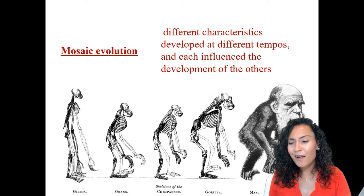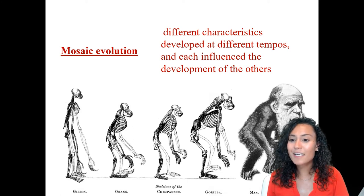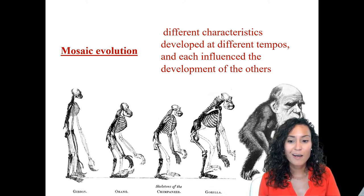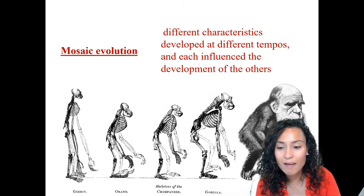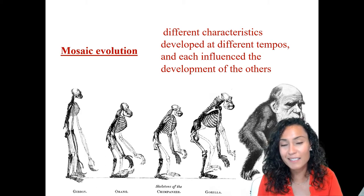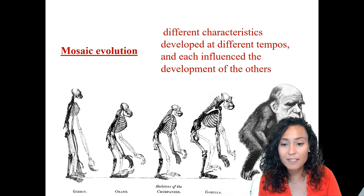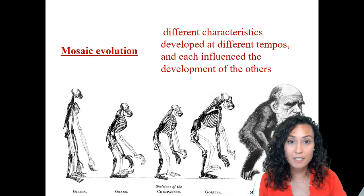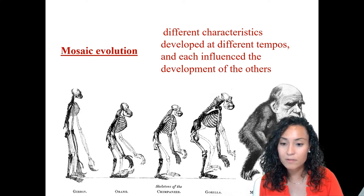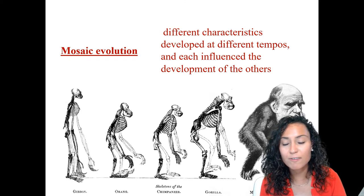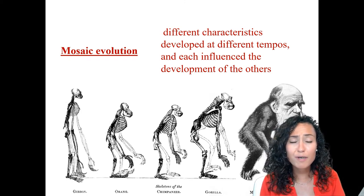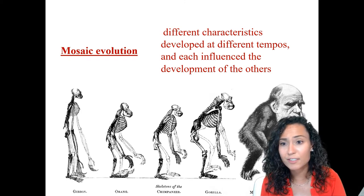But scholars have now taken a different approach, arguing for what's called mosaic evolution. Basically, mosaic evolution means that different characteristics develop at different tempos and each of those traits influences the development of others to a greater or lesser degree.